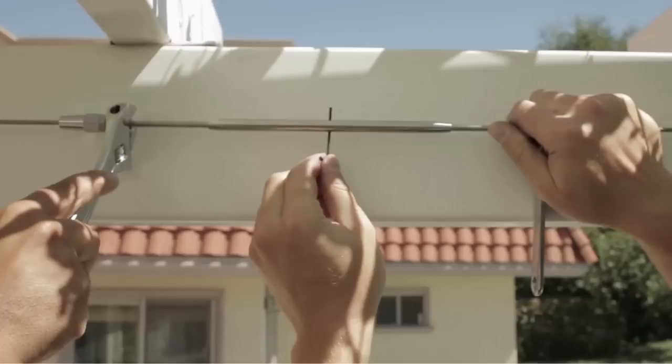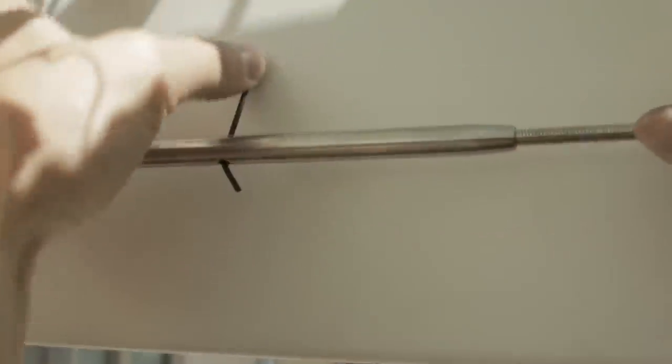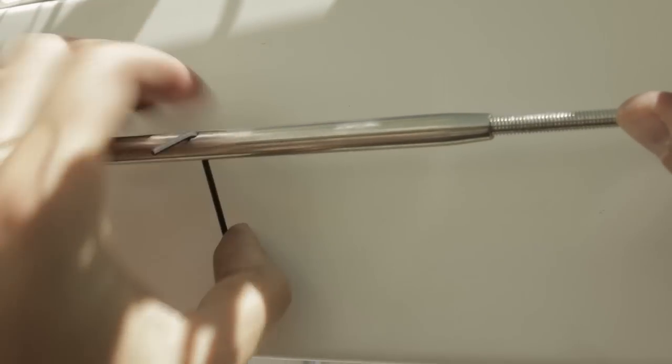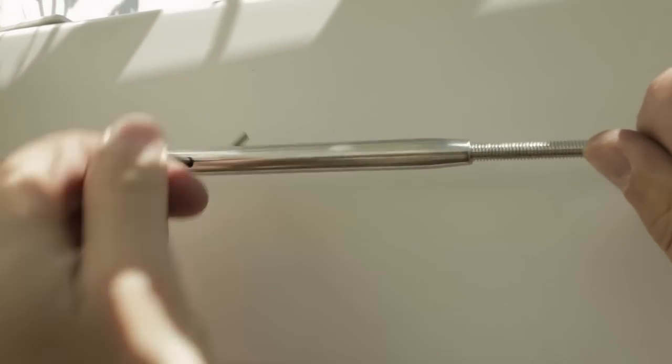Closing the turnbuckle requires two people. Using two wrenches, hold the long screw's ends to prevent them from turning. Then insert a short pin into the central cylinder, and turn it to tighten the turnbuckle.